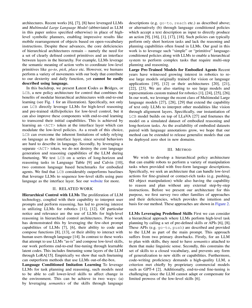LCB combines the benefits of modular hierarchical architectures with end-to-end learning by introducing a learnable <ACT> token at the interface layer to modulate the low-level policies. By leveraging separate <ACT> tokens, LCB preserves the core language generation and reasoning capabilities of the LLM during fine-tuning, thus enhancing the robot's ability to perform complex tasks that require multi-step planning and reasoning.